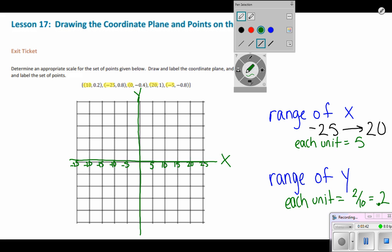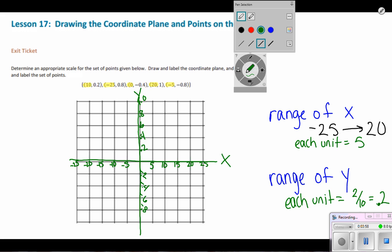So I'm going to have this be 2 tenths, 4 tenths, 6 tenths, 8 tenths, and one whole. Down here, negative 2 tenths, negative 4 tenths, negative 6 tenths, negative 8 tenths, and negative one whole.